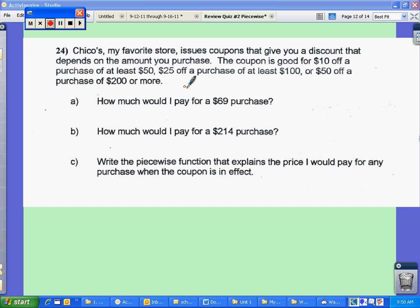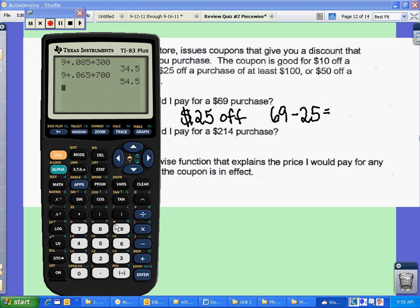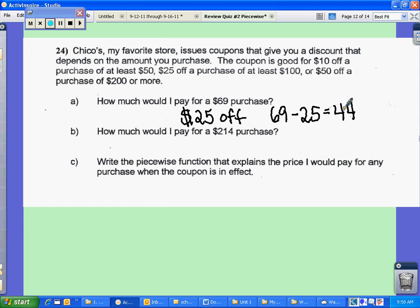So the first thing that we're going to do is we're going to look at how much it would be for $69. So I would get $25 off. So I would take 69 and I would subtract 25 from that. So 69 minus 25 is 44. So I would pay $44.